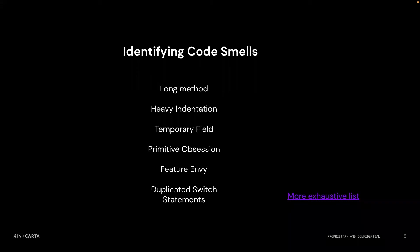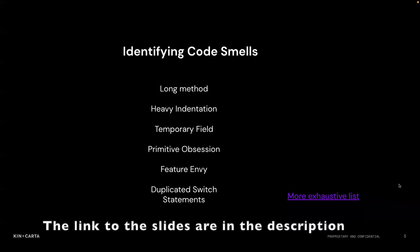Code smells are what we can look for to get an idea of what to refactor. A code smell is a signal that the design of your code could be improved. It doesn't always mean that it needs to be changed right away — it's just a signal. Here are some of the common ones we're going to look at today: long method, heavy indentation, temporary field, primitive obsession, feature envy, and duplicated switch statements.